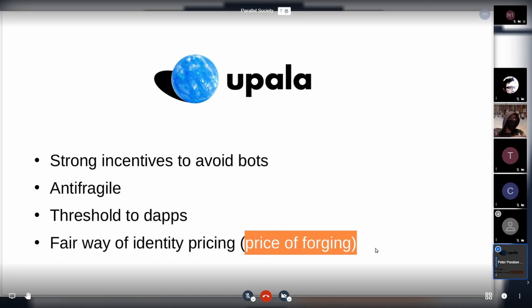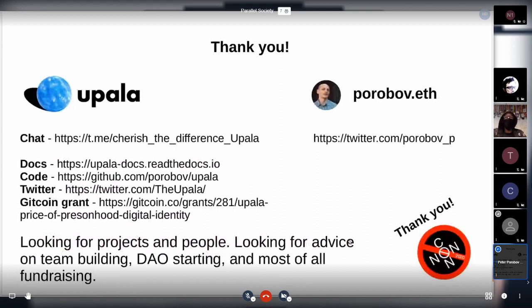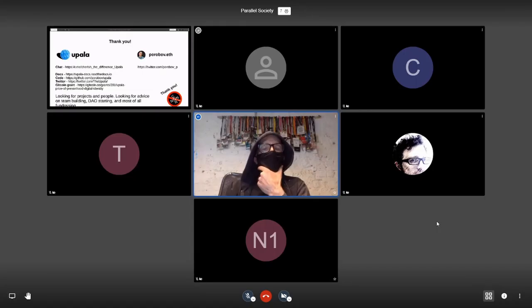Imagine you are stealing $10 from your friends - they will not let you in again for less than $10. You will have to pay them for the damage. Basically the score that Upala provides is the price of forging and the price of re-entering the system, and it's a fair way of identity pricing. So that's Upala. Thank you very much.